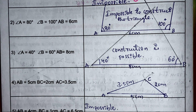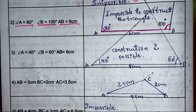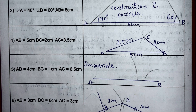Second case: angle A = 90°, angle B = 100°, AB = 6 cm. First, construct AB = 6 cm, then construct 80° at A and 100° at B. It is not possible to construct the triangle because the two lines do not meet at a point.